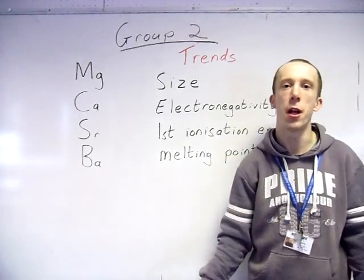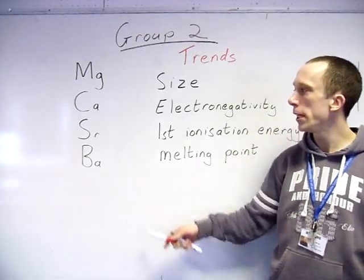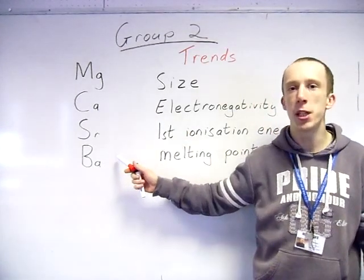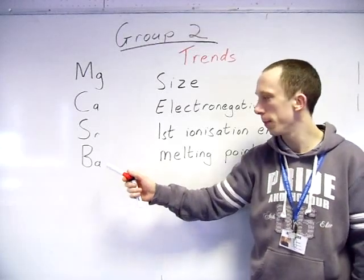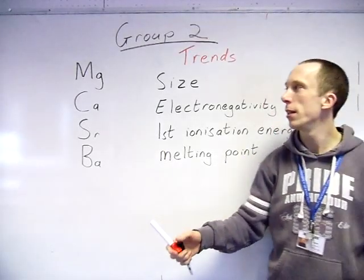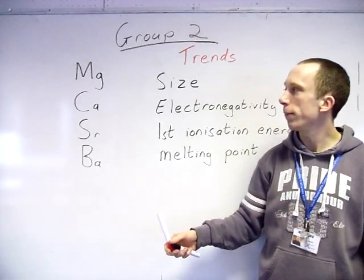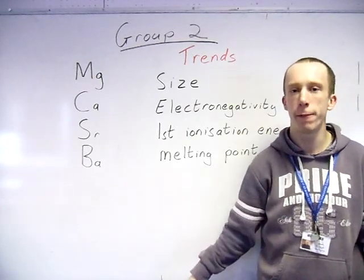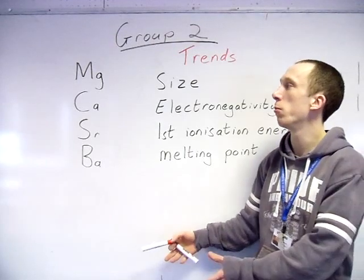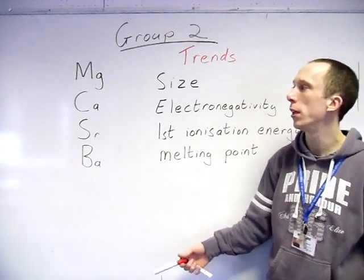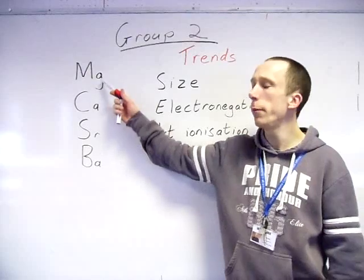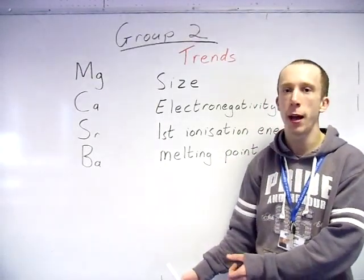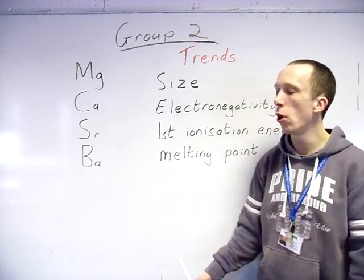First ionization energy: buy one get one free, exactly the same factors as that. So first ionization energy down the group decreases. Melting point: I don't sort of know why they try to get across this general trend because there are other factors which should be taken into account here, but roughly you are going to be looking at the strength of the metallic bonds.